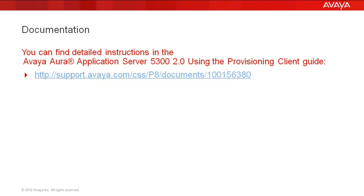We'll be starting this demo with the Provisioning Client open. You can find detailed instructions in the Avaya Aura Application Server 5300 Release 2.0 using the Provisioning Client Guide at the link shown. Now let's get started.